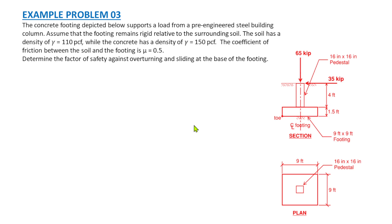The concrete footing depicted below supports a load from a pre-engineered steel building column. Assume that the footing remains rigid relative to the surrounding soil. The soil has a density of 110 pounds per cubic foot, while the concrete has a density of 150 pounds per cubic foot. The coefficient of friction between the soil and the footing, mu, is equal to 0.5. We are required to determine the factor of safety against overturning and sliding at the base of the footing.